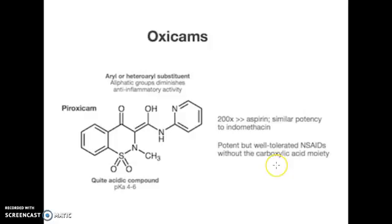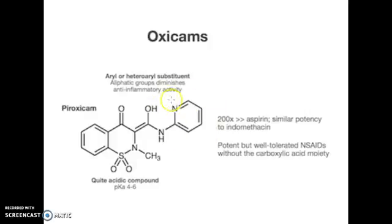So, to sum it all, there are just three functional groups to remember for piroxicam: the sulfone group, the enol group, and the heteroaromatic ring.